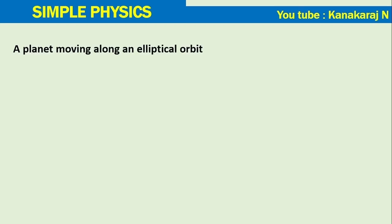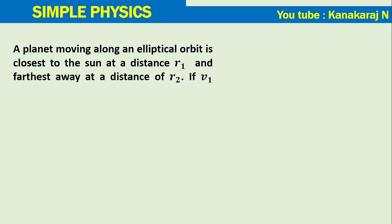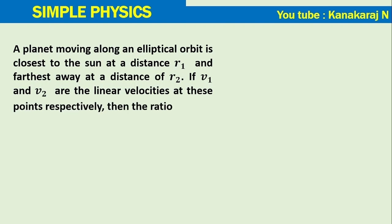A planet moving along an elliptical orbit is closest to the sun at a distance r1 and farthest away at a distance of r2. If v1 and v2 are the linear velocities at these points respectively, then the ratio v1 divided by v2 is.